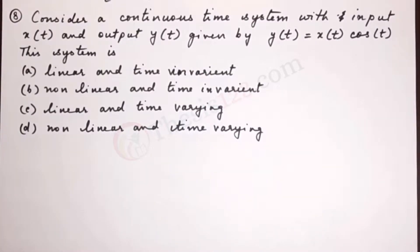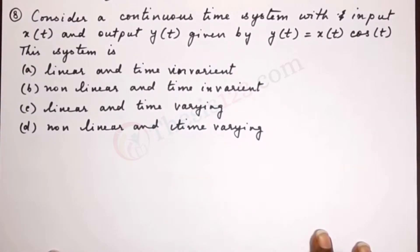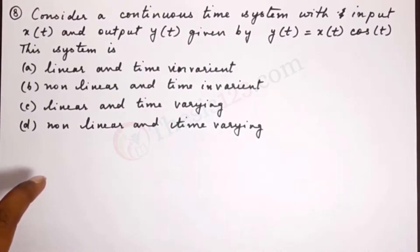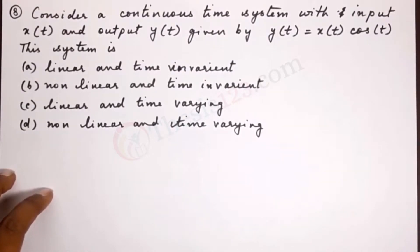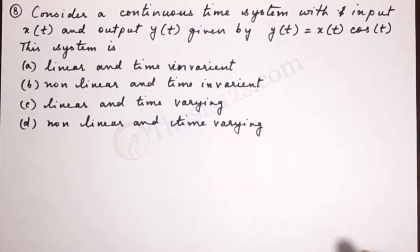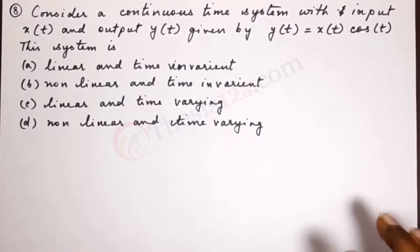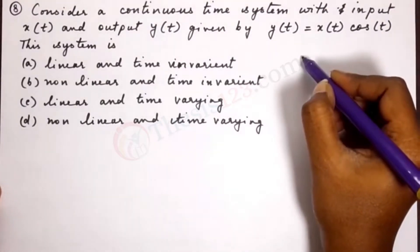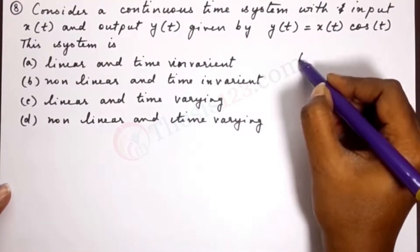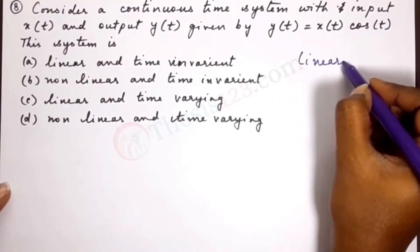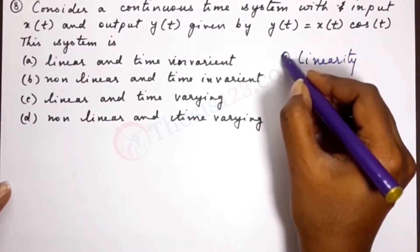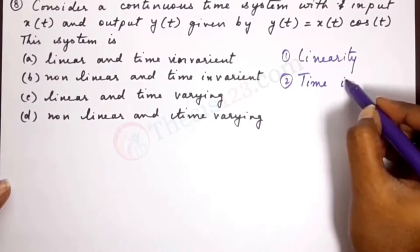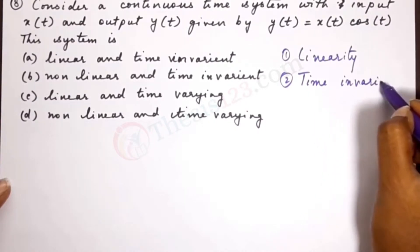We have two aspects to work on here. We have to check the linearity of the system, and we have to check the time invariance of the system. Those are the two factors: the first is linearity, and the second is time invariance.